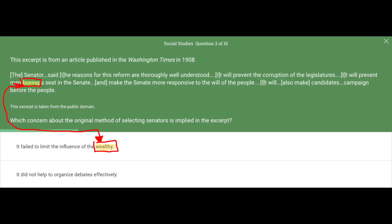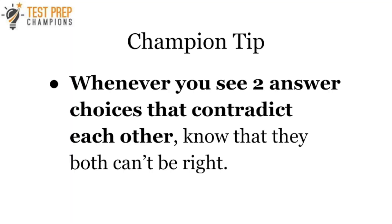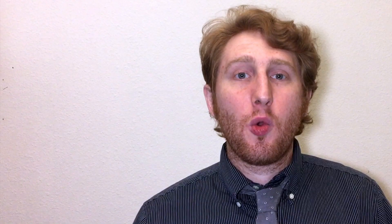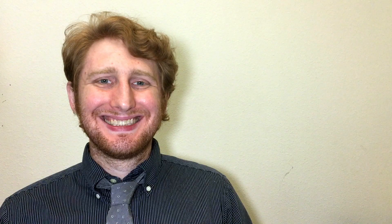Tip number four: use what I call the power words method. Whenever you see words in one of the answer choices that are either similar or related to words in the passage, that answer choice is very likely to be the correct answer. Tip number five: use process of elimination whenever you can to rule out answer choices that can't be correct. Tip number six: whenever you see two answer choices that contradict each other, know that one of them is probably going to be the correct answer. Tip number seven: always rule out answer choices that have information that directly contradicts something stated in the passage.